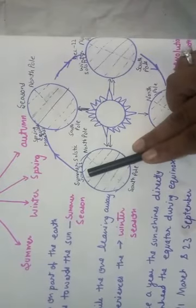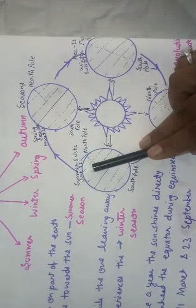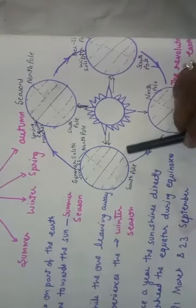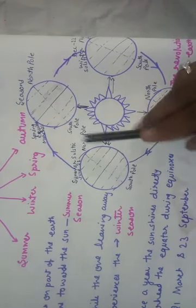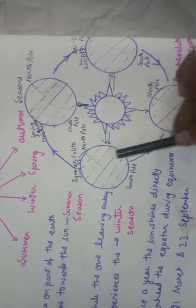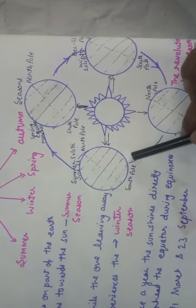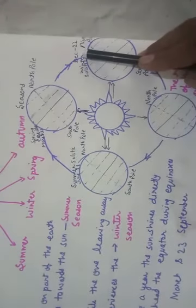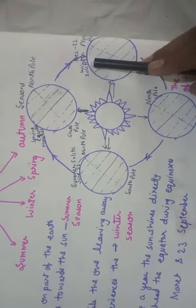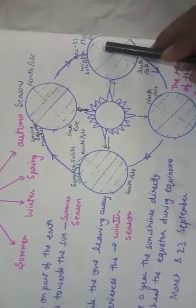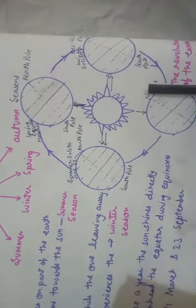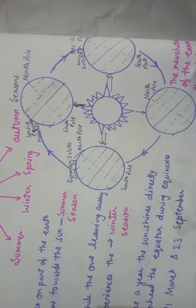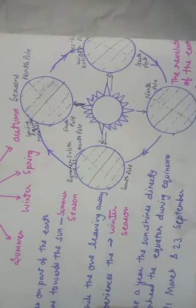On 21 June, when the sun is shining directly overhead the tropic of Cancer and the northern hemisphere is tilted towards the sun, it experiences summer solstice. On 22 December, the sun is directly over the tropic of Capricorn in the southern hemisphere. The tilt of the axis brings the southern hemisphere closer to the sun, making it summer.